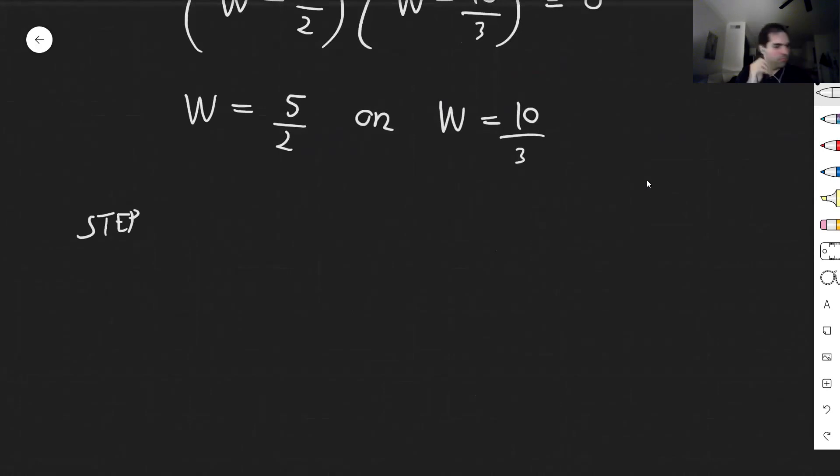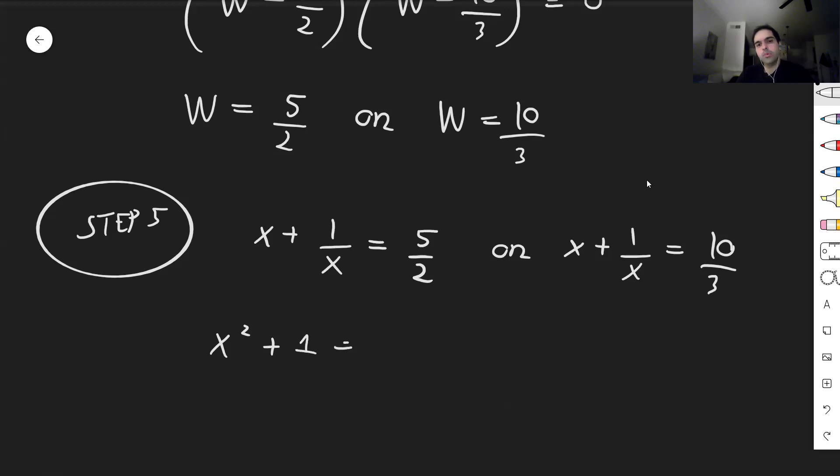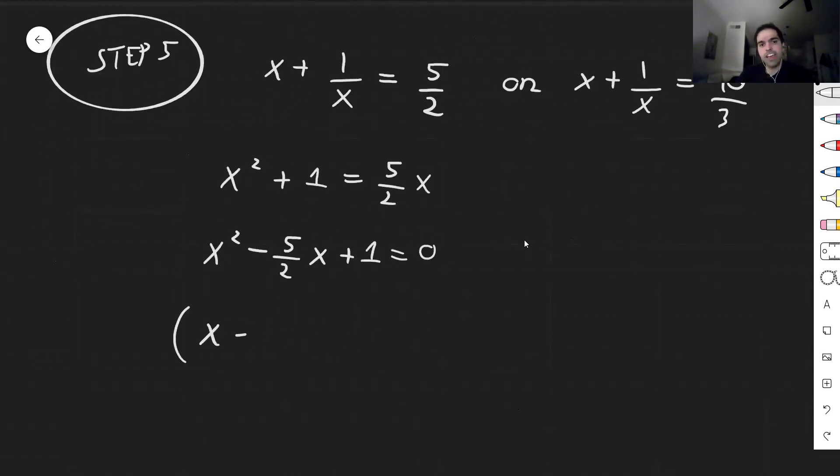So step five. So what do we get? We get either x plus 1 over x equals 5 halves or x plus 1 over x equals 10 thirds. And then you can multiply by x. So you get x squared plus 1 equals 5 halves x. So x squared minus 5 halves x plus 1 equals 0, which you can factor out as, I believe, x minus 2 times x minus 1 half equals 0, which gives you x equals 2 or 1 half.